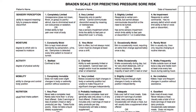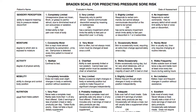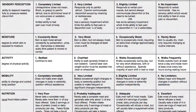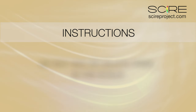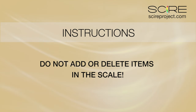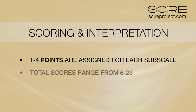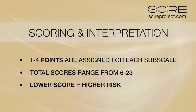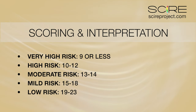Each of the six subscales includes three or four levels with a key concept description and one or two phrases describing its qualifying attributes. For example, in the subscale activity, the lowest score of one is given when a patient is bedfast, two for chairfast, three for walks occasionally, and four for walks frequently. It is important not to alter the scale by adding, deleting, or modifying existing definitions, as any such change will result in inaccuracy. One to four points are assigned for each subscale and combined to give the final score. Total scores can range from 6 to 23 — a lower score indicates higher risk. Scores below 18 indicate that preventive measures must be taken to maintain skin integrity.